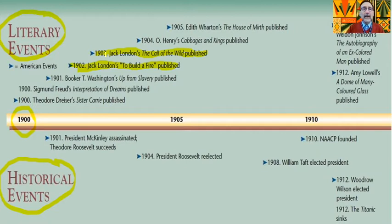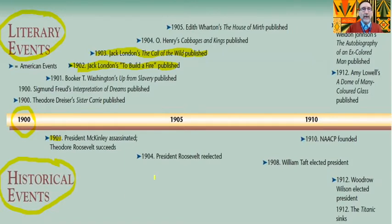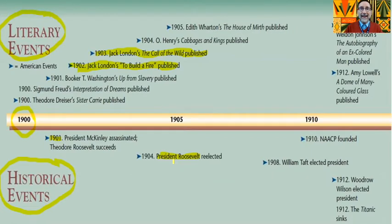Going on in the world at that time: in 1901, there was a presidential assassination. McKinley became the third United States president to be assassinated in about 50 years — after Lincoln and James Garfield. With McKinley's death, Theodore Roosevelt became the youngest president ever. He wasn't the youngest elected president, but the youngest at that point. Interestingly, somebody tried to assassinate Roosevelt too. He was giving a speech, was shot, and finished the speech before receiving treatment.